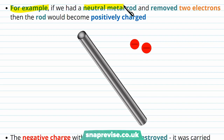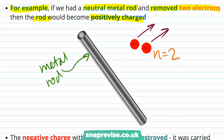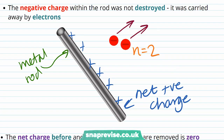For example, if we had a neutral metal rod and removed two electrons, then the rod would become positively charged. Here we have our metal rod and we're removing two electrons, so our number of electrons being removed, n, is equal to two. Because this rod has had electrons removed, it's got more protons than electrons, so it's going to have a net positive charge. Although the rod no longer has these negative charges, the negative charge within the rod was not destroyed — it was just carried away by the electrons. So the rod now has a positive charge, but the negative charge that it's lost is carried away by the electrons.